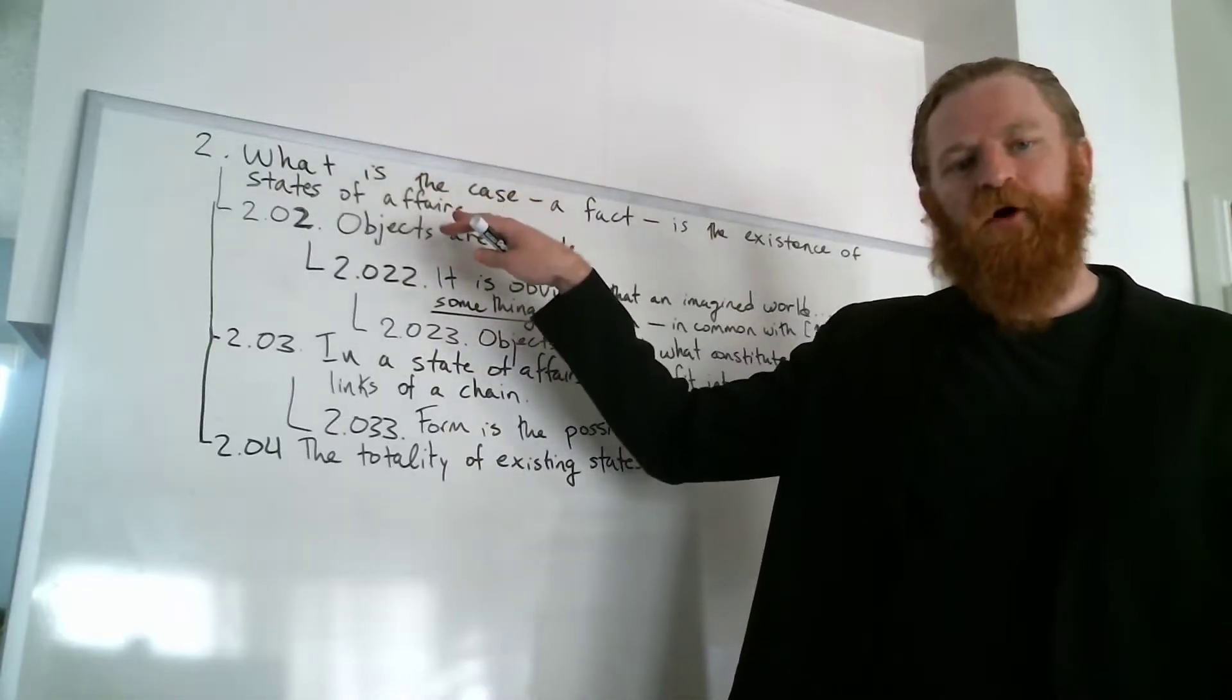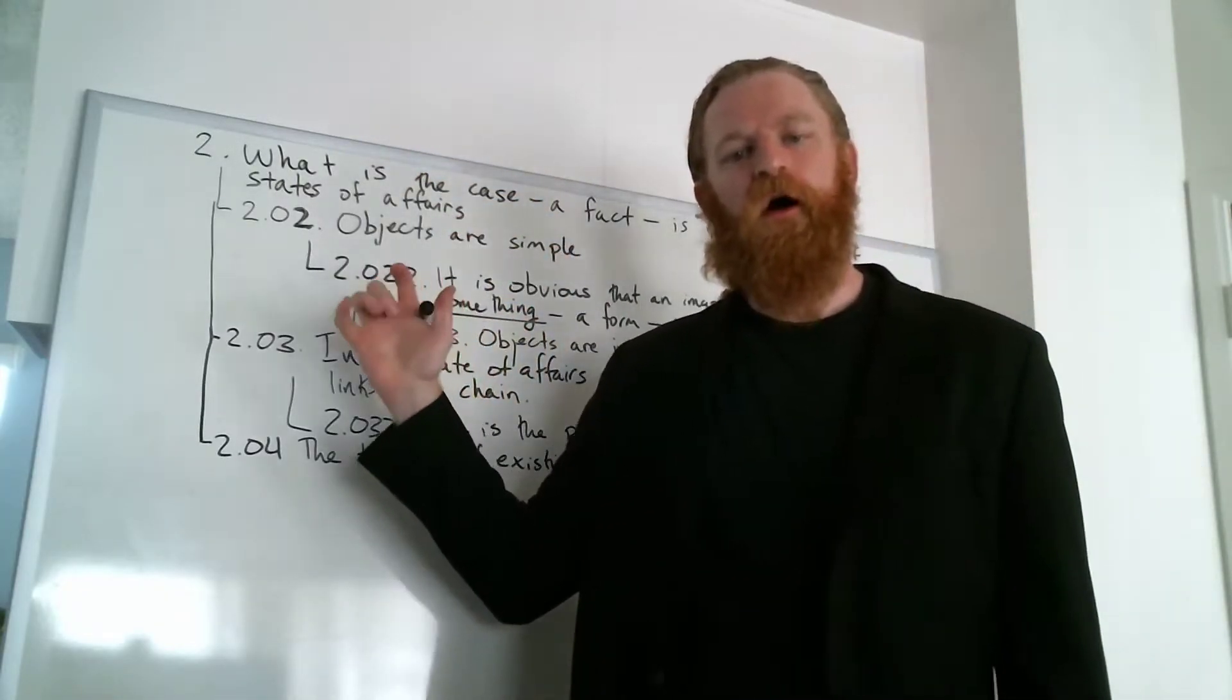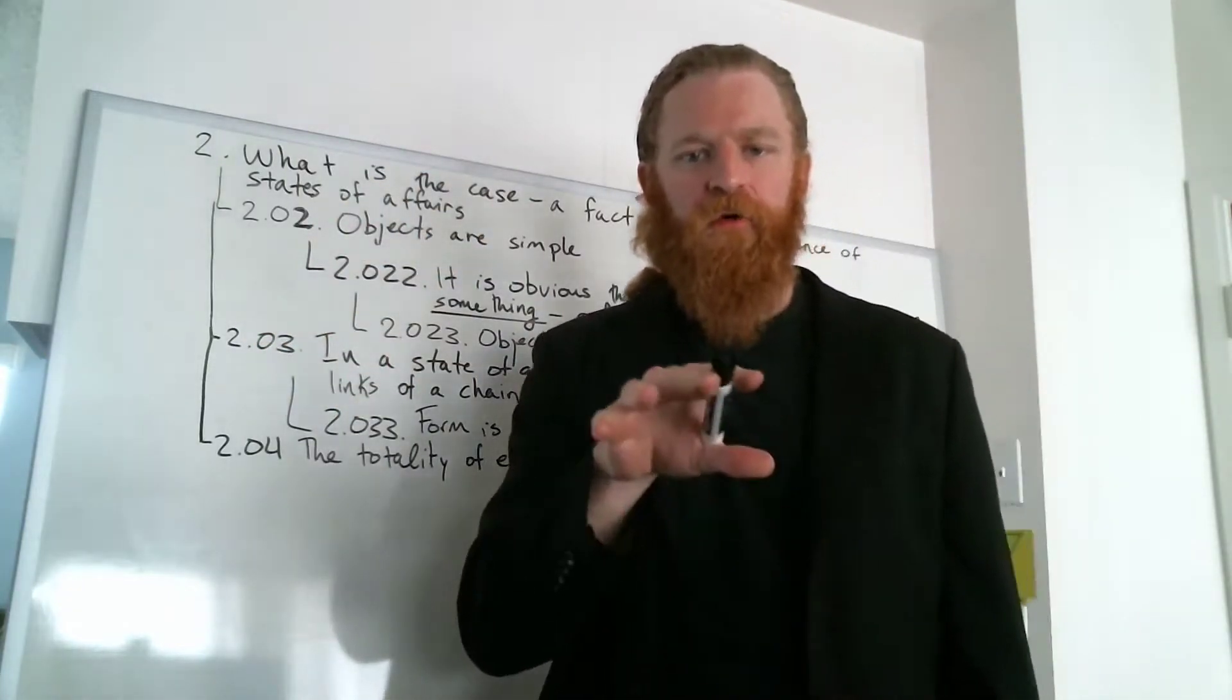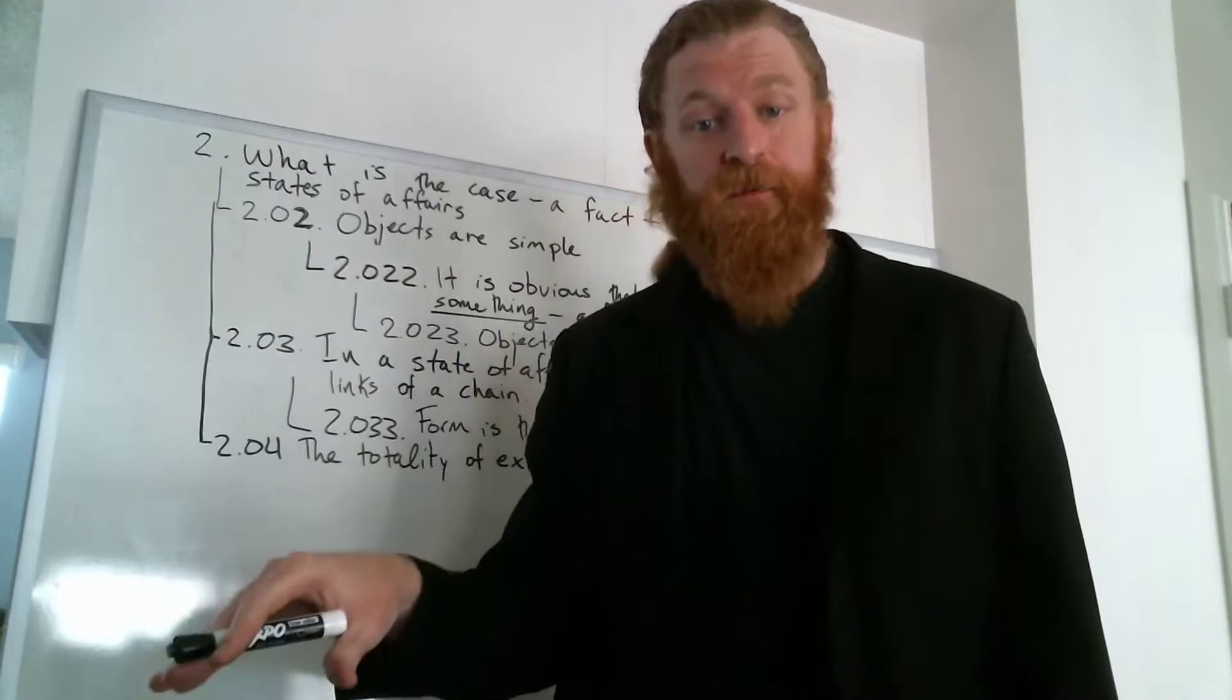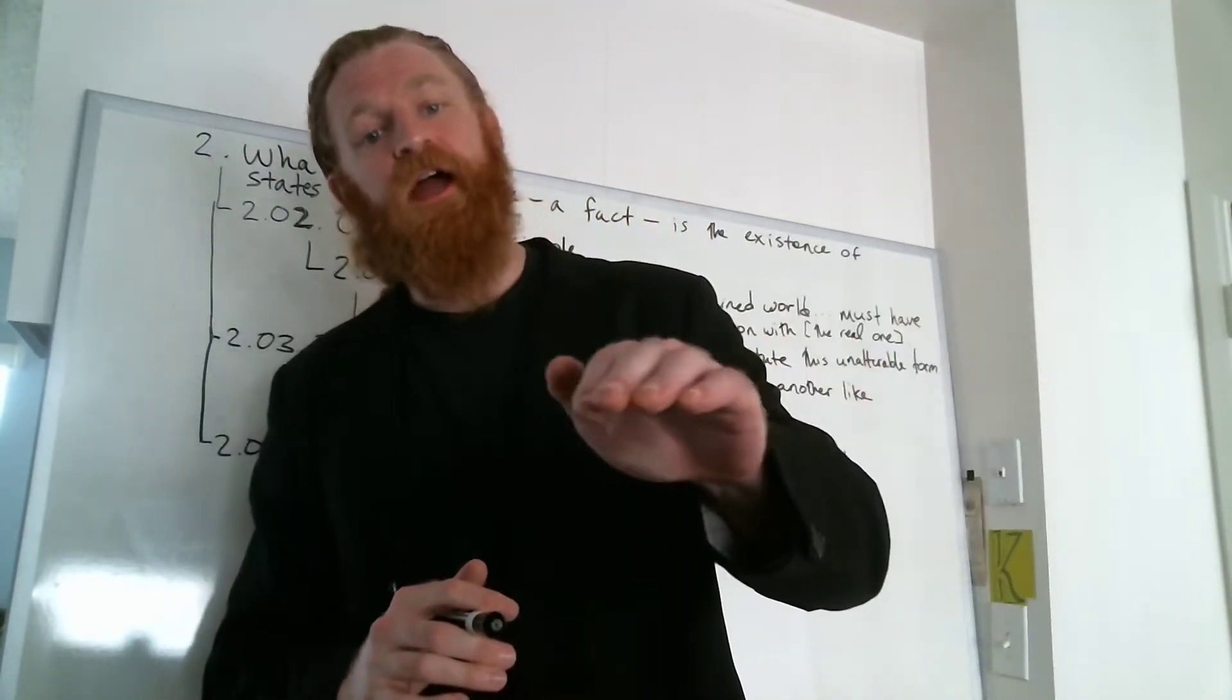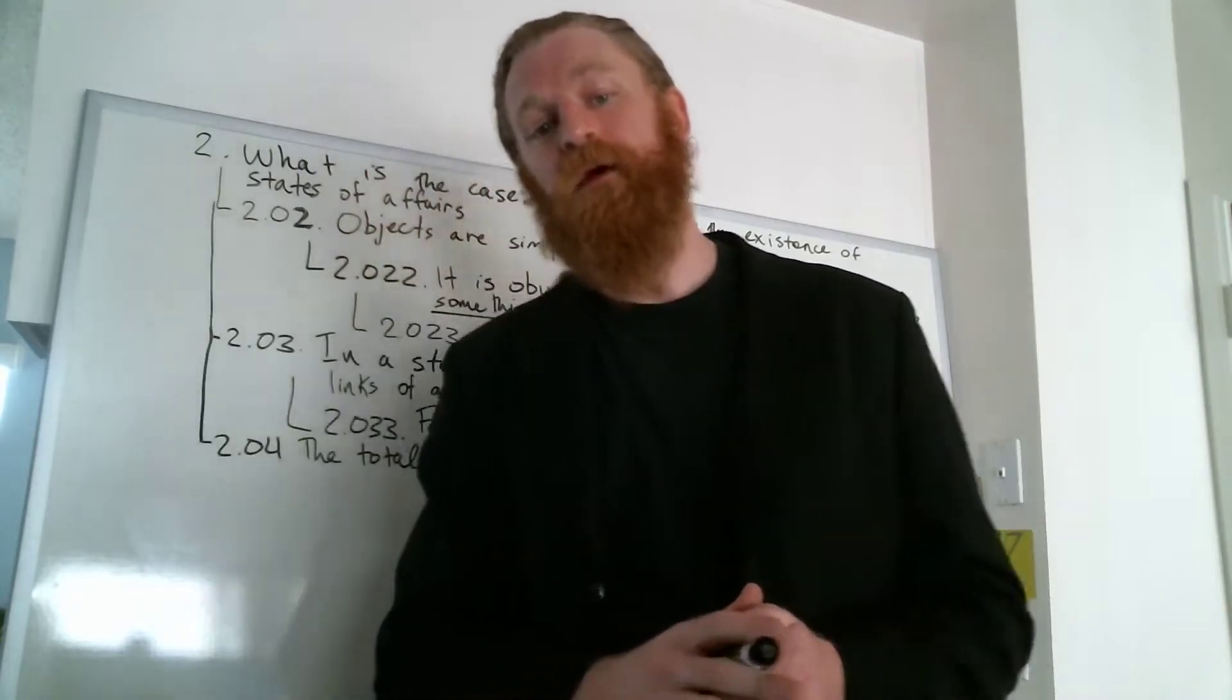So far in 2.02 and 2.03 we've been talking about the nature of objects - they're simple, they're without properties, and their substance. And we've been unpacking the notion of a substance and how it underlies both actuality and possibility.